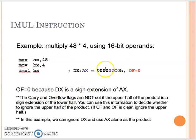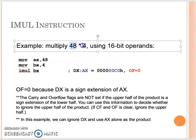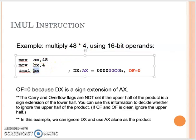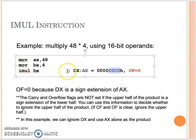Now let's try the same multiplication — 48 times 4 — but using a 16-bit operand. We need to use AX, so we move 48 to AX and 4 to BX. After IMUL BX, the result should be in DX and AX. In this case, our AX holds the result. In the 16-bit environment, the overflow flag is clear, meaning the upper operand can be ignored because 00C0H is enough to correctly represent positive 192.